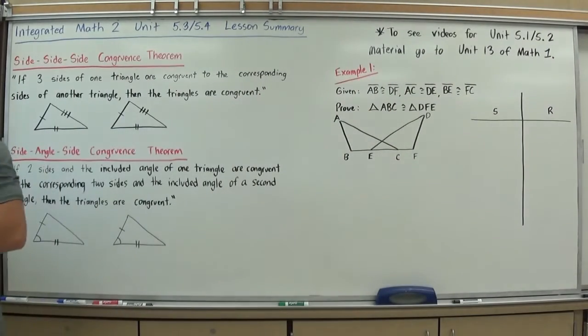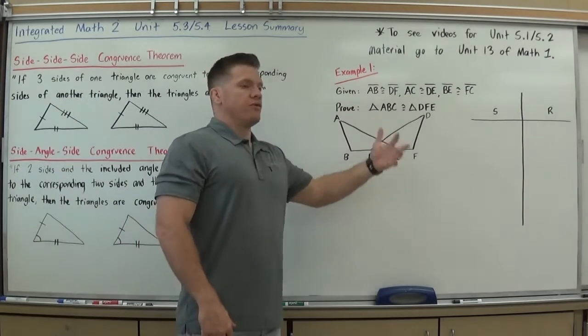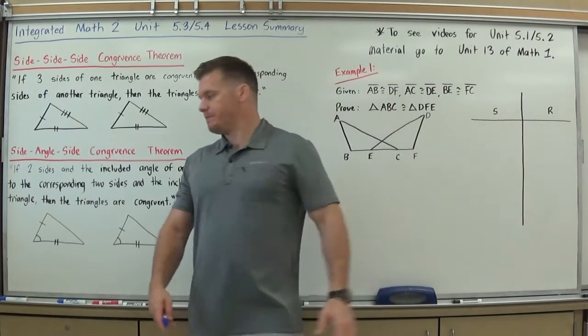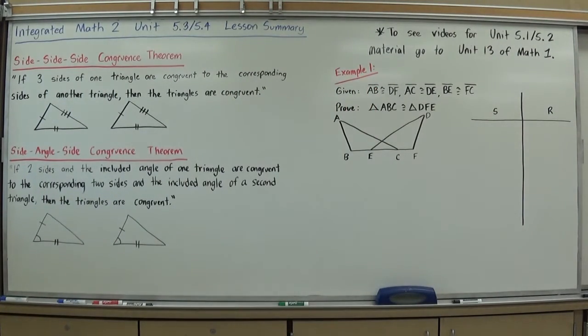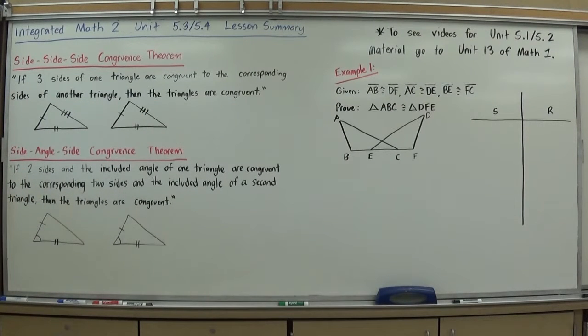And you've actually seen all of these before: side, side, side, angle, side. We needed triangle congruence in Math 1. The only difference really between what you did in Math 1 and Math 2 is now we're going to take these ideas and some of these problems and rather than just try to find out if they're congruent and kind of informally say how they are, we're going to do full proofs for them. So let's review those theorems real quick. The first one is side, side, side congruence theorem. That states that if three sides of one triangle are congruent to the corresponding sides of another triangle, then the triangles are congruent.